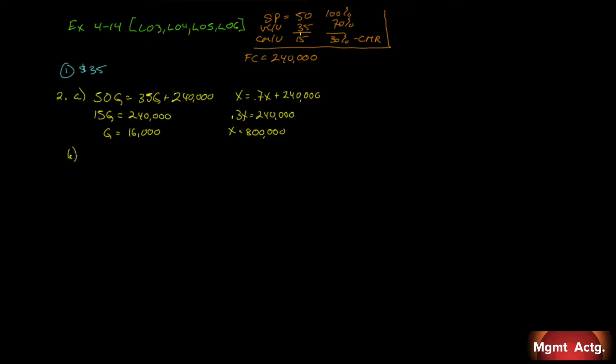B. What sales level in units and in sales dollars is required to earn an operating income of $75,000? Well, we're just going to take our same 50Q equal to 35Q, our variable cost, plus our 240,000, plus our profit that we want, 75,000. We'll still get 15Q on this side, but here we'll get 315,000. 315 divided by 15, Q will equal 21,000. We can take 21,000 and multiply it by 50, or we can use this method. We'll just multiply it by 50 bucks and we will get 1,050,000.